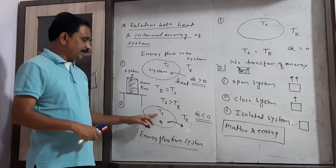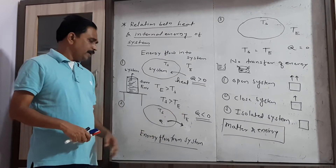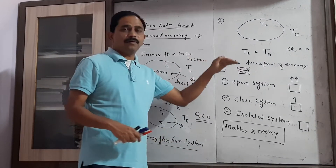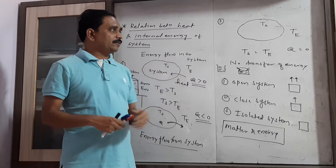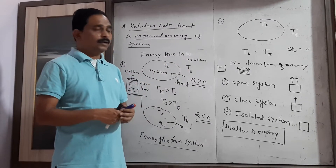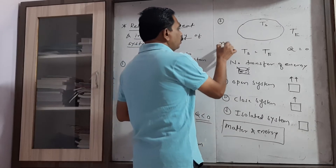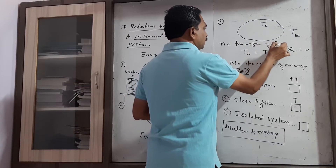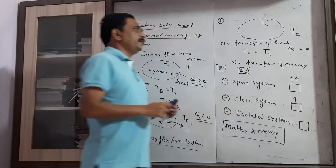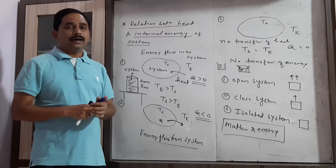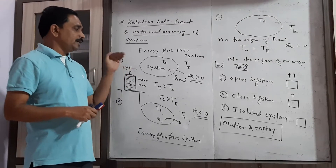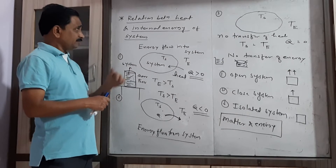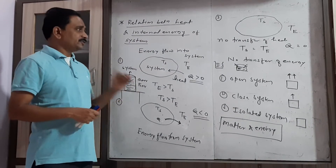In the third case, when T_s equals T_e — when the temperature of the system equals the temperature of the environment — there is no transfer of heat energy between the system and the environment. These are the three cases to consider in the relation between internal energy and the system.